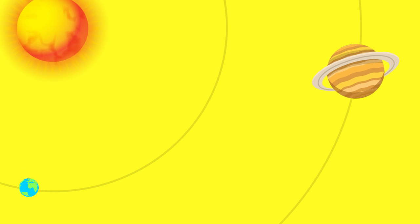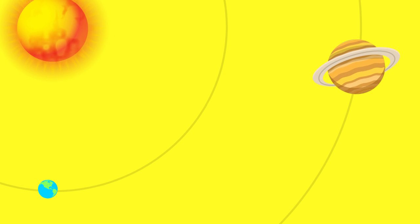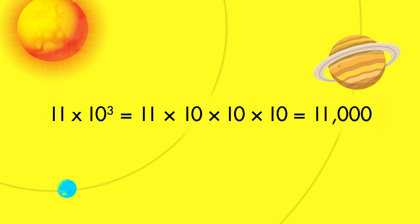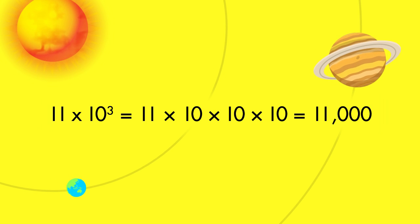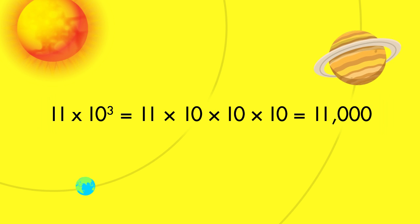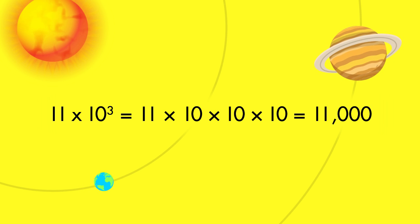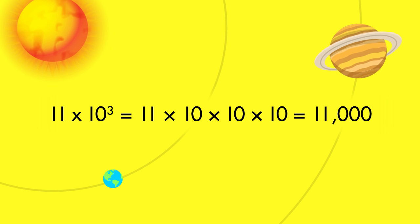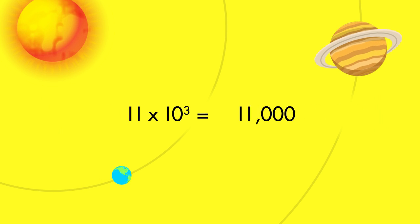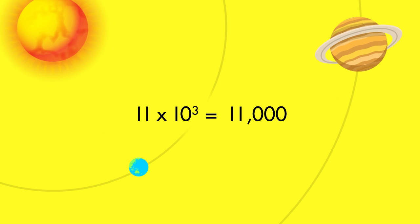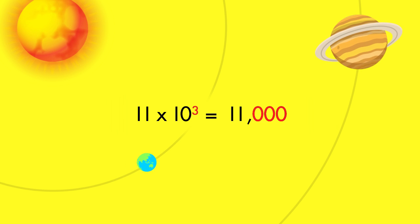For the planet Saturn to orbit around the Sun, it takes about 11 times ten to the third power Earth days, or 11,000 Earth days. Notice that the exponent tells how many zeros should be in the product.